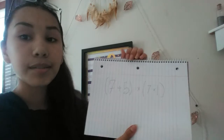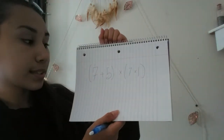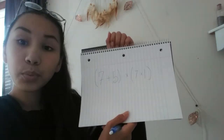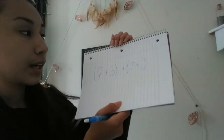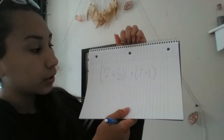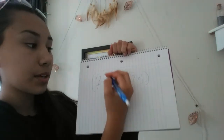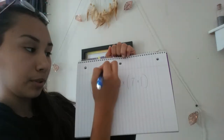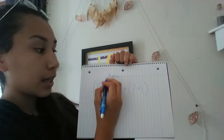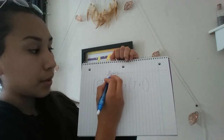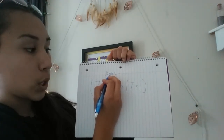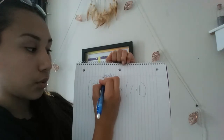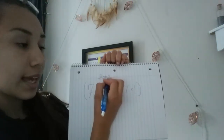Now class, do you know what seven plus five in parentheses times seven times one is? This will be our next unit. If you don't know, there's something called PEMDAS — parentheses, exponents, multiplication, division, addition, and subtracting — and you do it in order from the P to the S.